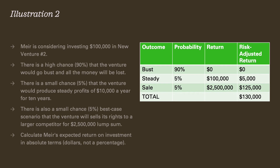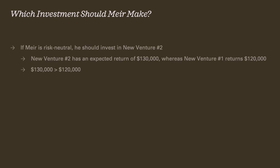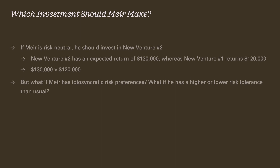So should Meyer make the investment in New Venture 1 or New Venture 2? If Meyer is risk-neutral — not particularly risk-seeking or risk-averse — and looking at this totally rationally, then he should take the larger expected return. Comparing Venture 2's expected return of $130,000 to Venture 1's $120,000, the rational choice is Venture 2. But Meyer may have idiosyncratic risk preferences — a higher or lower risk tolerance than average — so we need to talk about risk tolerance and risk preference.